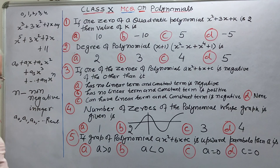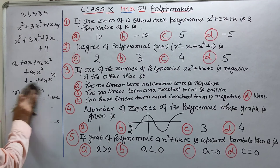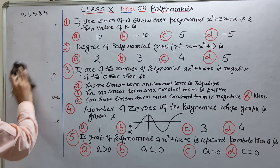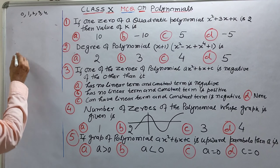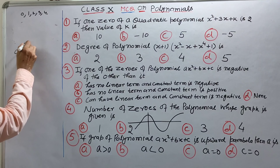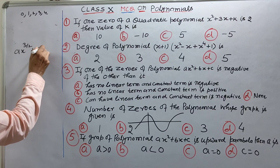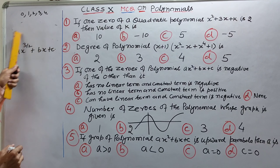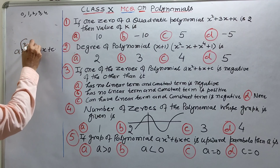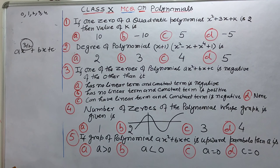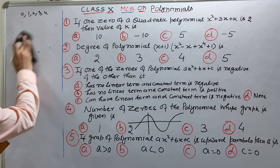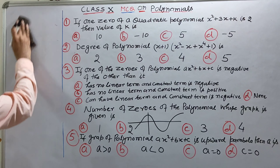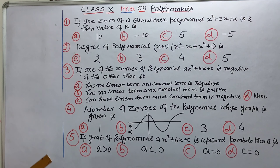Agar yeh sab pucha diya hai, toh yeh polynomial hoga. Agar kahin par maan lijiye x power half hai, 3y2 hai — jaise maan lijiye yeh likha ho: ax power 3y2, bx plus c — kya yeh polynomial hai? Nahin hai. Kyun nahin hai? Kyunki x ki power yahan par non-negative integer nahin hai. Toh ek toh cheez hume yeh yaad rakhna hai ki polynomial kya hota hai.